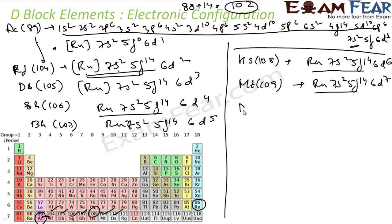Similarly you can write for Ds also. There are not much exceptions here because these are all radioactive elements. They have very short life and it's difficult to actually visualize electronic configuration of these elements.